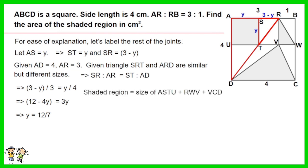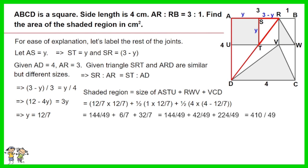Shaded region equals size of ASTU plus RWV plus VCD. Work out the equation. The answer is 8 and 18 over 49 centimeters squared.